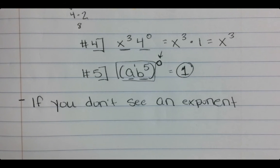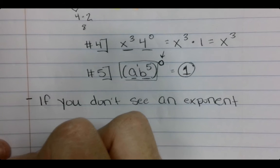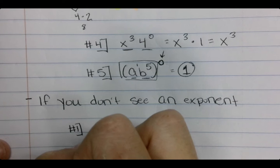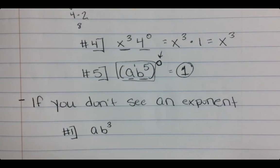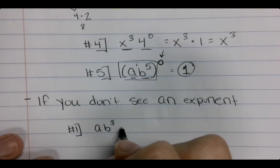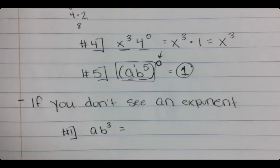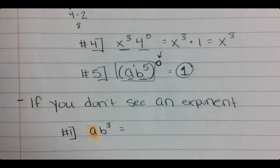And what I mean by that is, if you have, say, a times b to the third, that a, while you do not see the exponent, that a is its own thing. And b is something completely different.